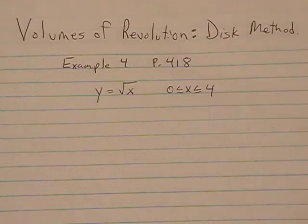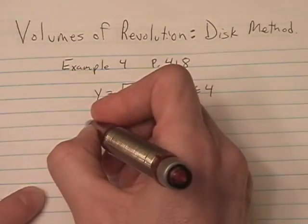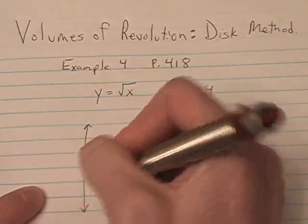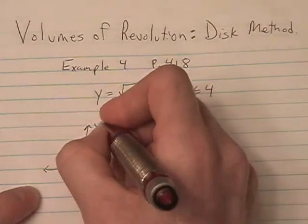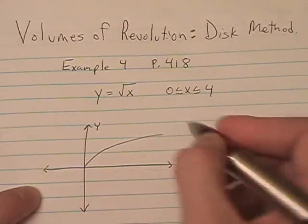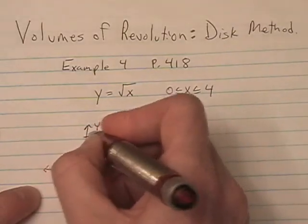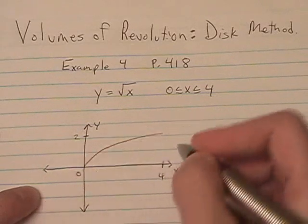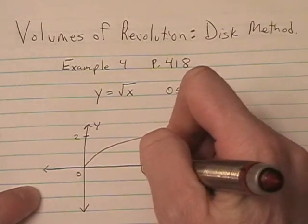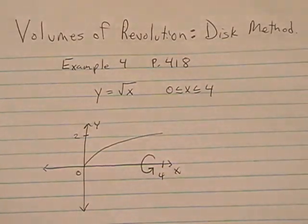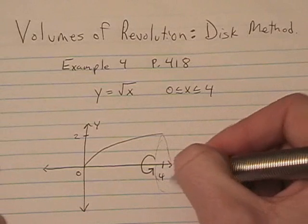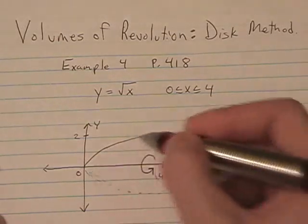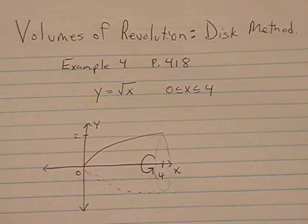Following the steps for finding the volume using this method, we are going to draw the region and identify the radius function. When you draw your region, make sure you include the x and y-axis. The square root of x looks about like this. And we always draw some sort of an indication of what our axis of revolution is — in this case the x-axis, y equals 0. And if you want to go ahead and sketch the solid — it kind of looks like the nose cone of a bullet or a rocket ship.